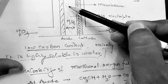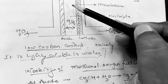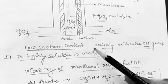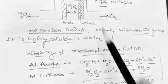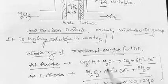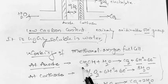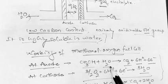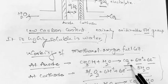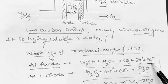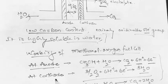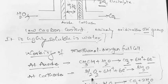At the anode, methanol and water undergo a reaction producing carbon dioxide, six H⁺ ions, and six electrons. Since this is the anodic reaction, six electrons are liberated. At the cathode, oxygen is supplied and reacts with H⁺ ions and the incoming electrons.